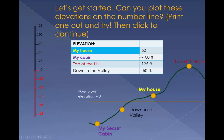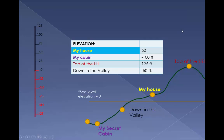Can you plot these elevations on the number line? Here they are in the picture. Print out a number line and give it a try, then click to continue. Here they go: my secret cabin, down in the valley; my house; and the top of the hill. There they are.